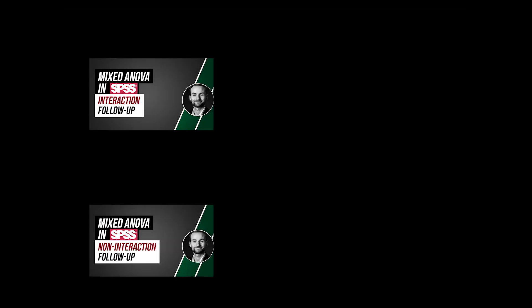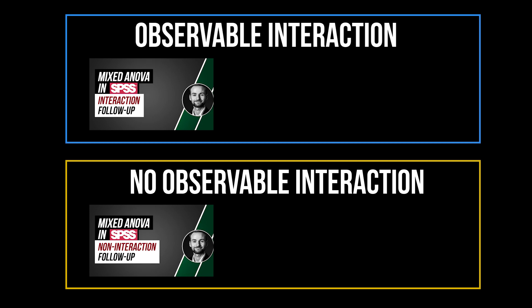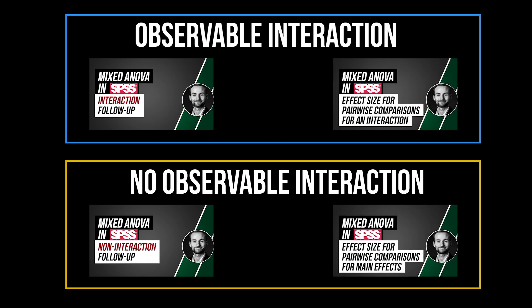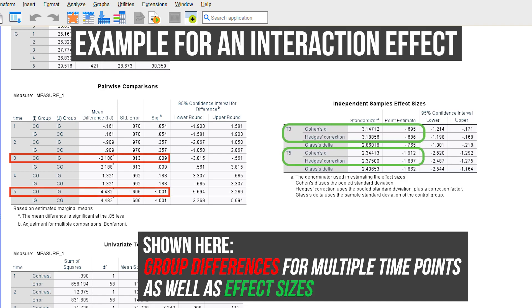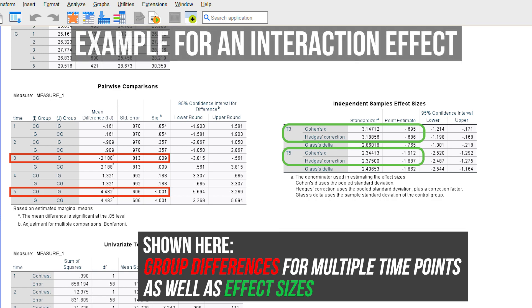For Scenarios 2 and 3, pairwise comparisons are also calculated using estimated marginal means. These also include the corresponding effect sizes. As these are always pairwise comparisons, this is Cohen's D, which is calculated slightly different, depending on the effect being analyzed, which I've also shown in detail in the linked videos.